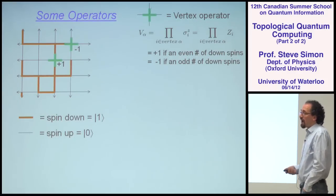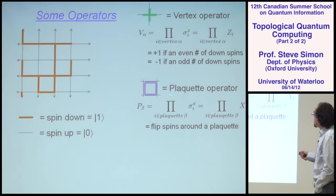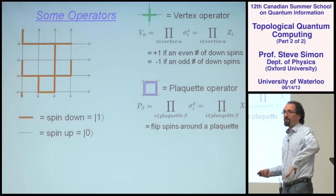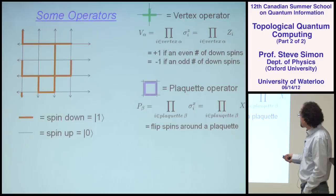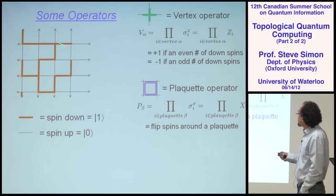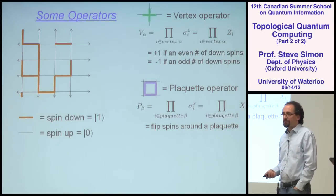Here's another operator which is a little less easy to define. You take a plaquette with four spins going around it and multiply by sigma x for all four spins — that's a product of four sigma x's around the plaquette. That has the effect of flipping over all the spins along those four bonds around the plaquette. So if I apply the plaquette operator here, it will turn the red things unred and the unred things will become red, just like magic.